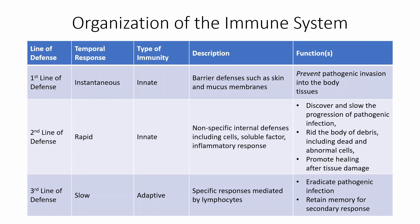First and foremost, your first line of defense is instantaneous — it helps you as soon as a pathogen even tries to get in. This is what we call innate, meaning it doesn't matter what the pathogen is; it's going to protect you from any and all pathogens. It's usually some sort of barrier — prevention. If we can prevent something from getting into your body, that is the best way to defend ourselves. Things like your skin and mucous membranes help prevent pathogens from getting in, so that's why it's our first line of defense.